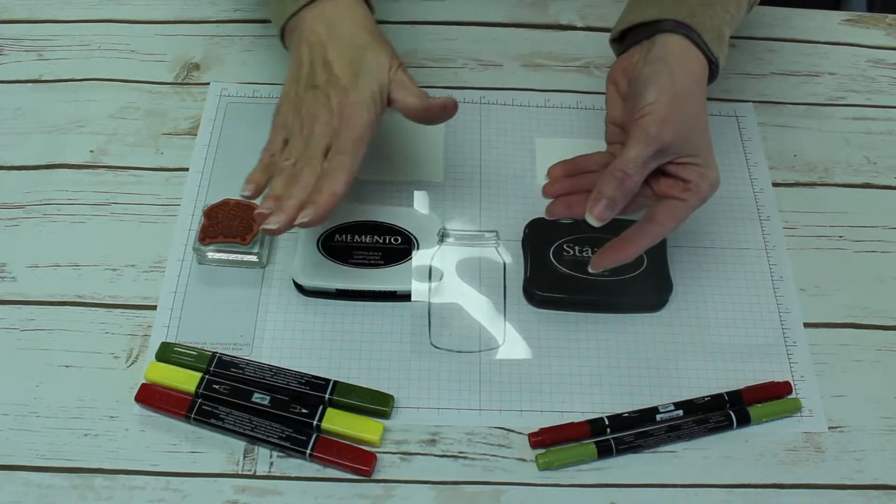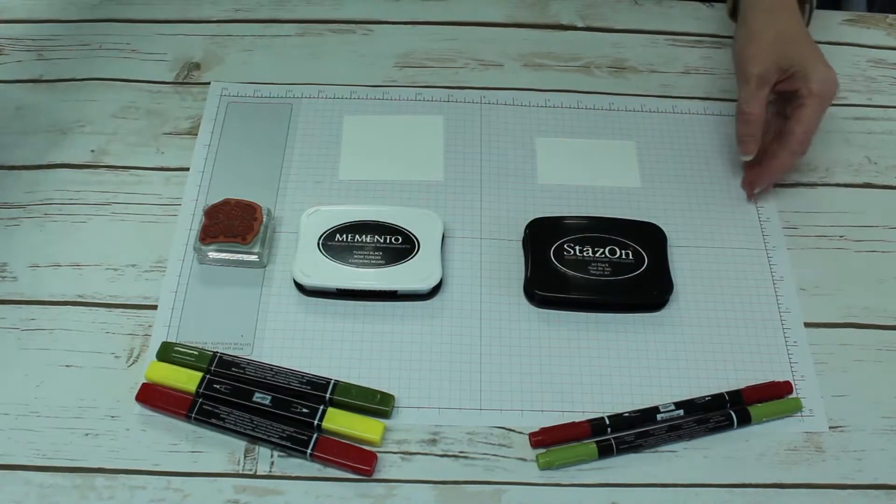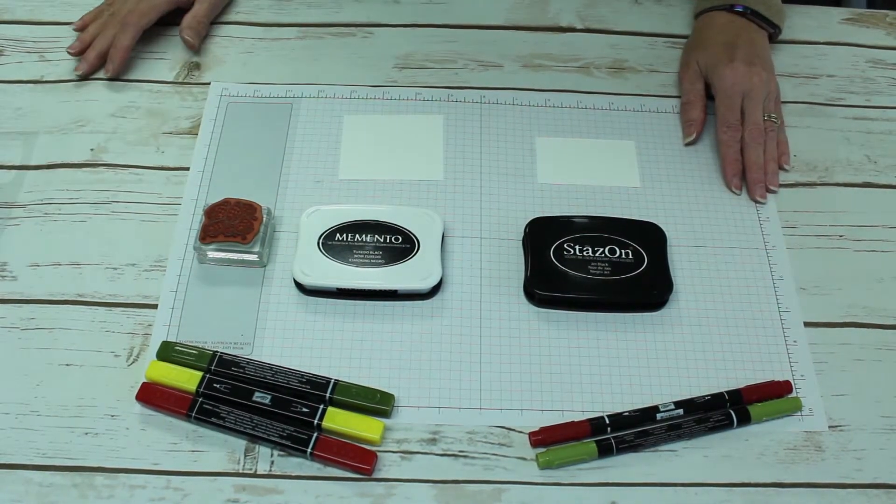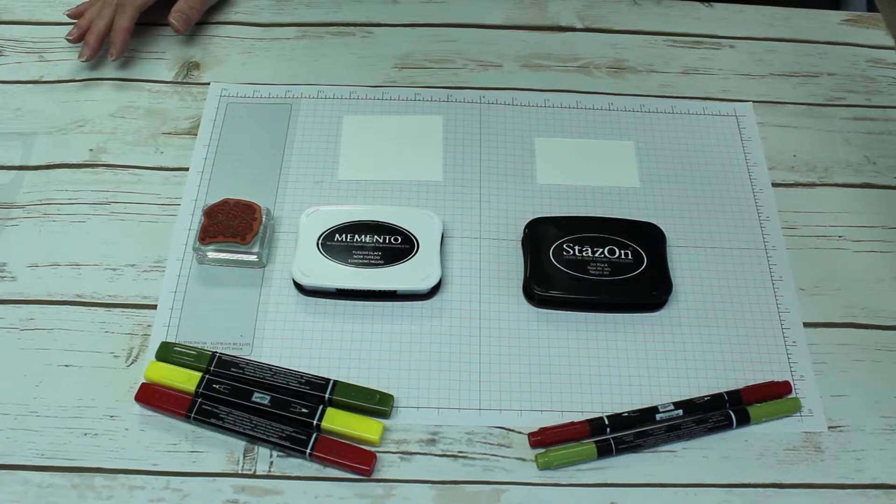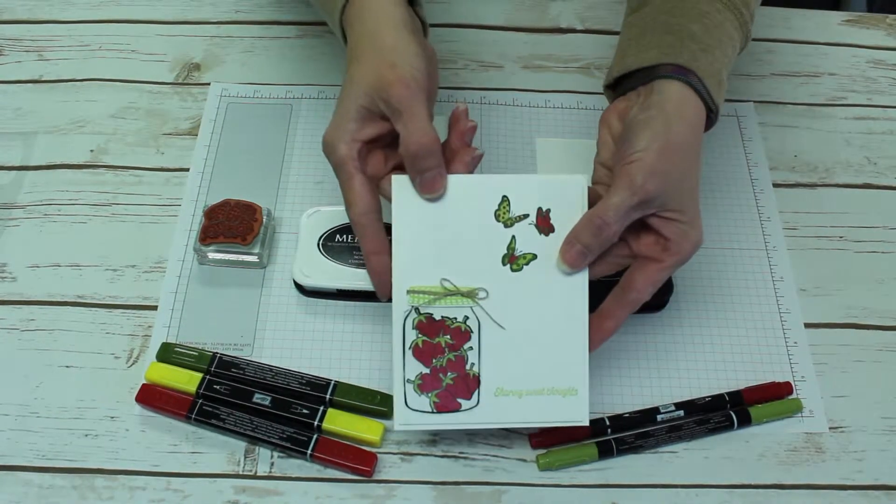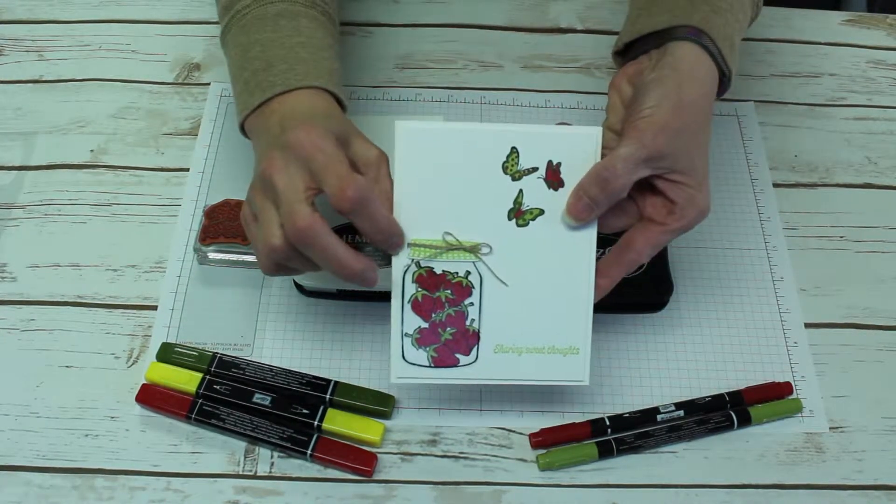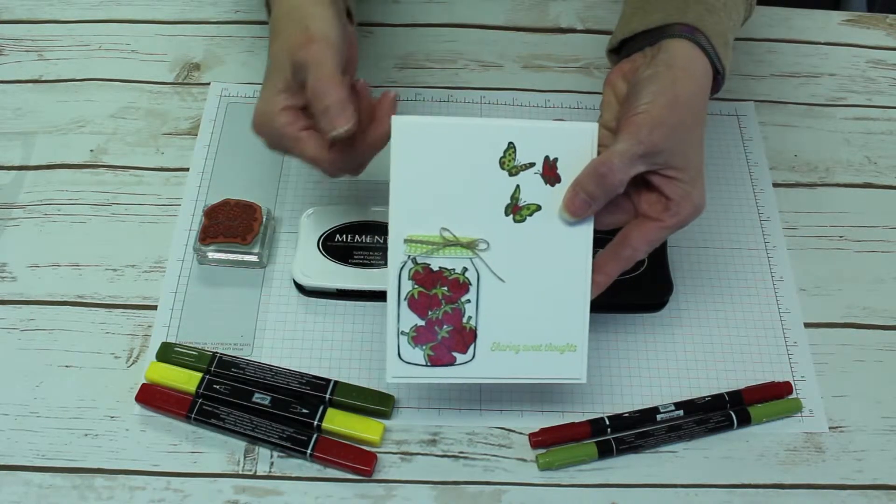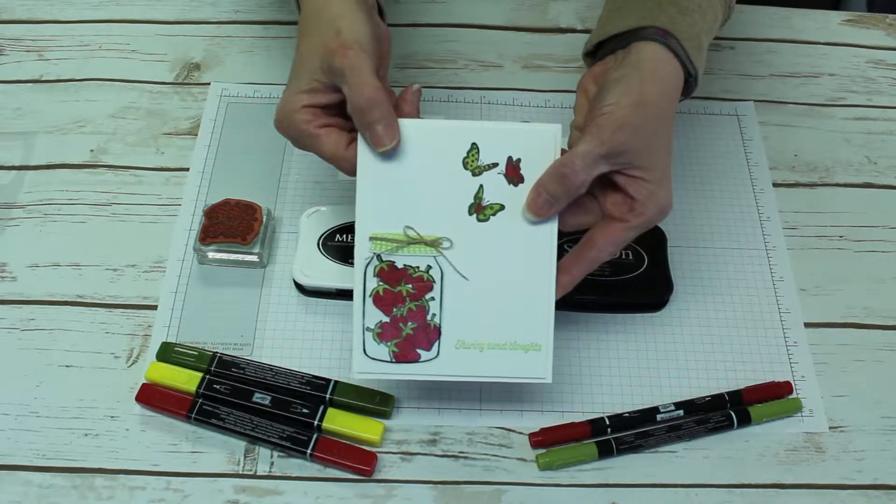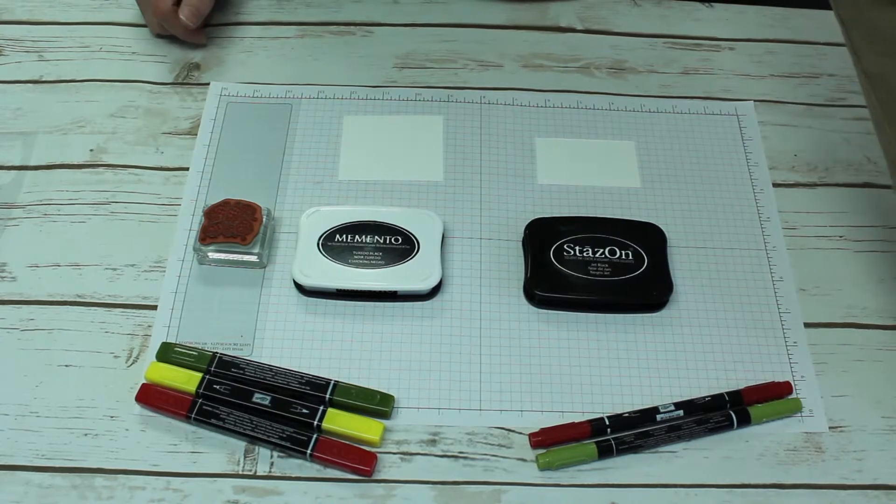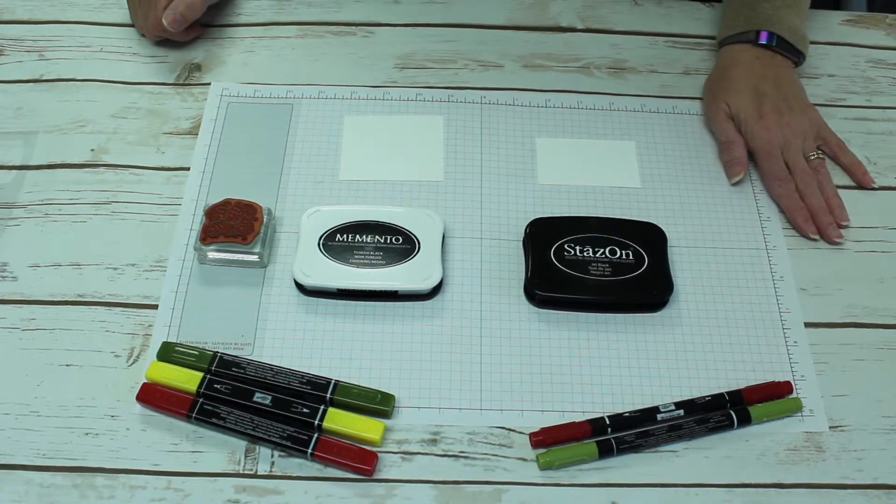After that dried, I cut that out and this is the card that I made with it. You can see that I made the clear mason jar which I then filled with the strawberries. This is a very versatile ink and it can be used on a lot of surfaces.